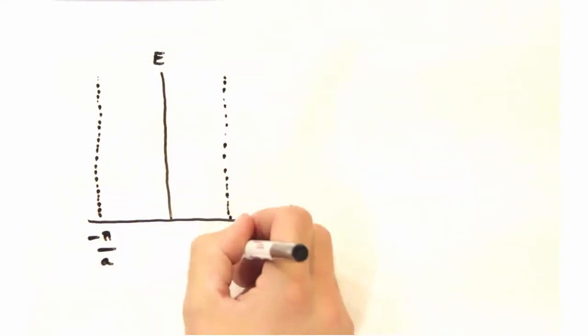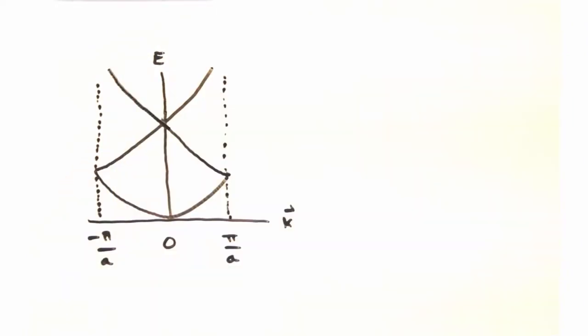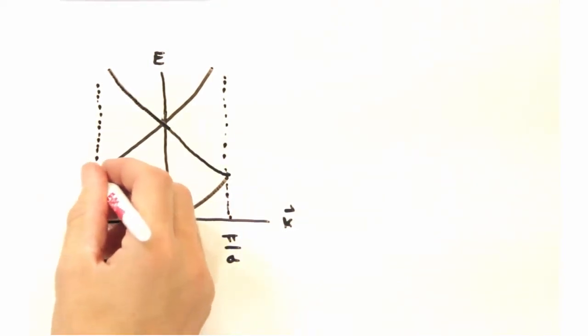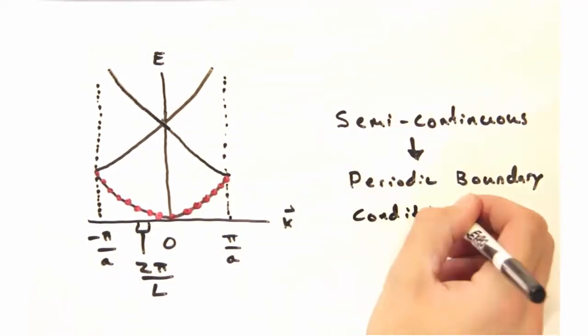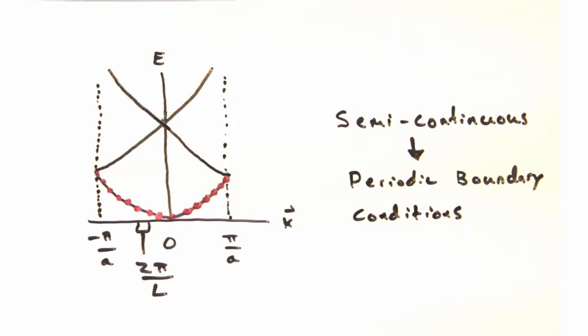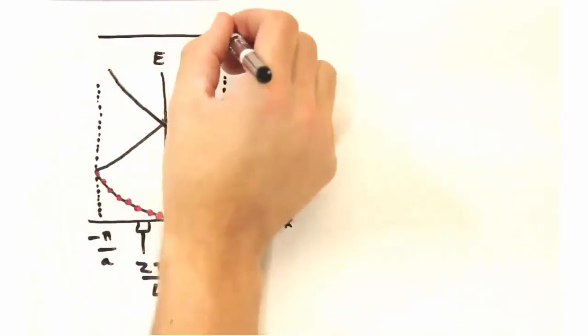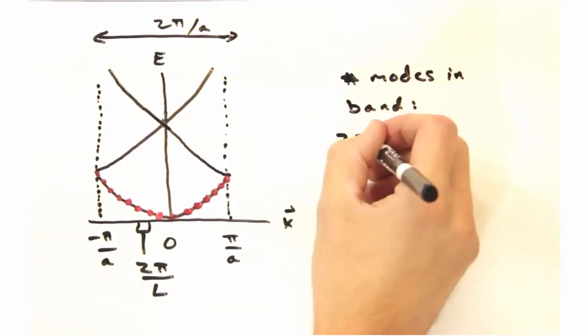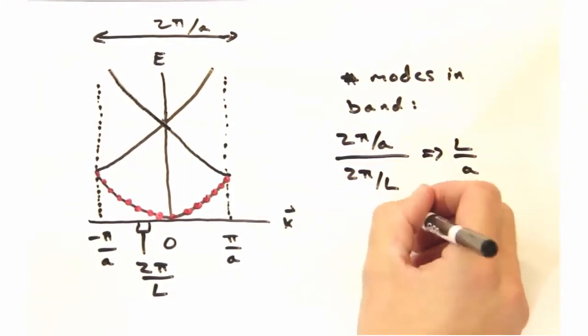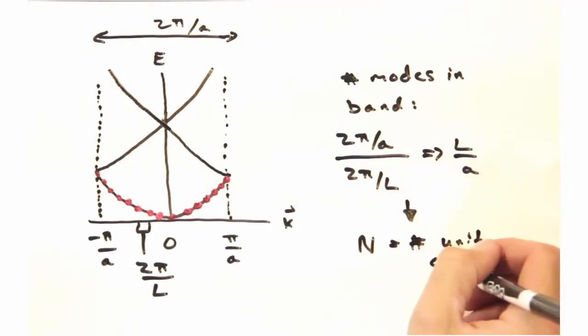I know that we plot band structures from k equals minus pi over a to pi over a, and the line is really only semi-continuous. And by semi-continuous, you're saying that the line is actually composed of a series of discrete k points, each separated by 2 pi over L. Yeah, so in 1D, each band spans a reciprocal distance of 2 pi over a. Then the number of discrete k points in the band must be equal to the number of unit cells, N.